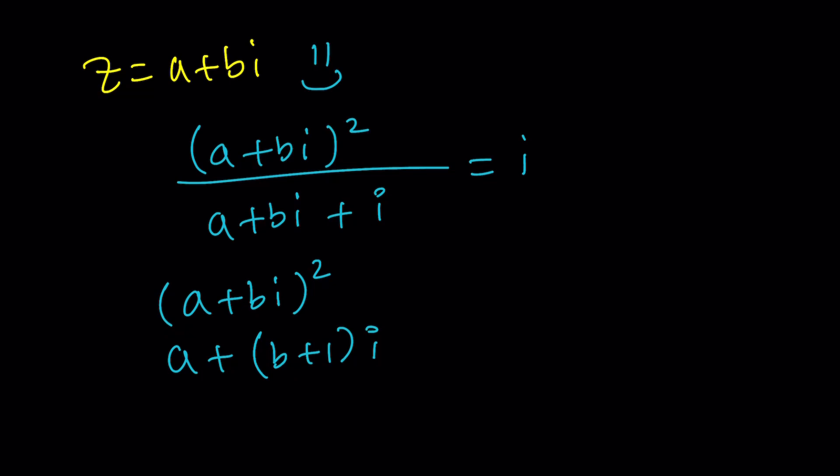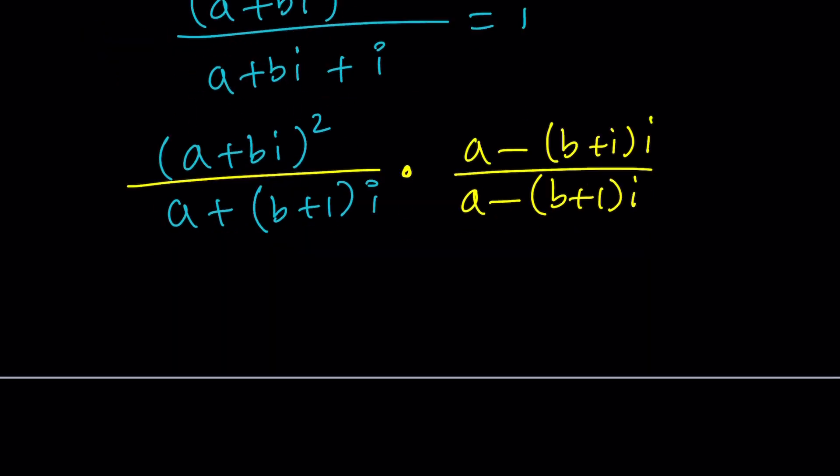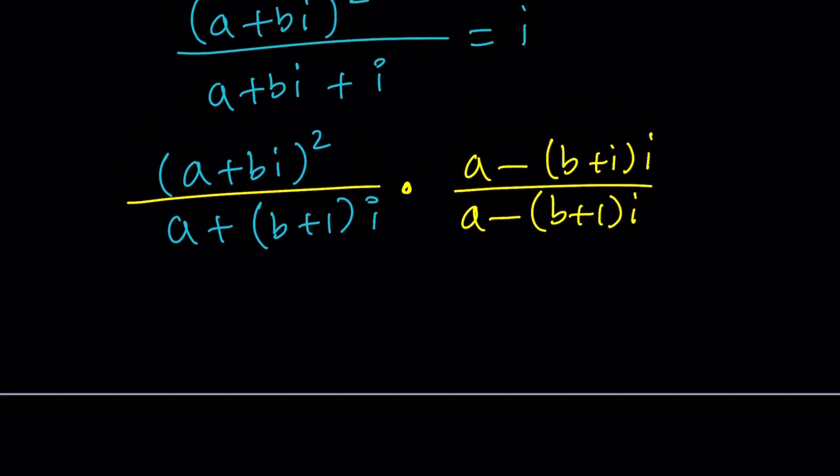So I'm going to go ahead and make this a little shorter and multiply by the conjugate. The conjugate in this case would be a minus (b plus 1) times i. And, of course, we have to multiply the top and the bottom. In the numerator, we haven't expanded it, so we need to do that. Let's go ahead and expand this. That's going to give us a squared minus b squared plus 2abi. Notice that i squared is negative 1. That's how I got that.